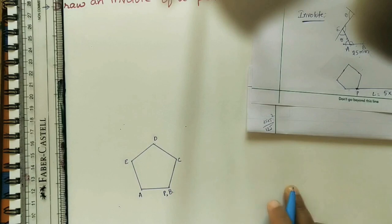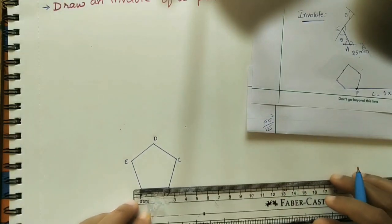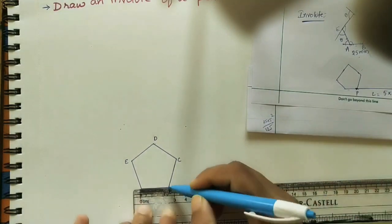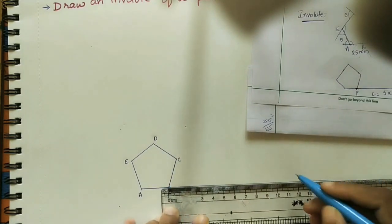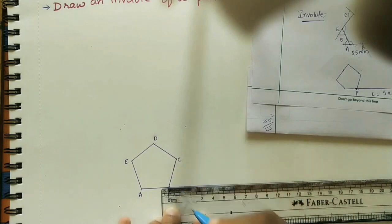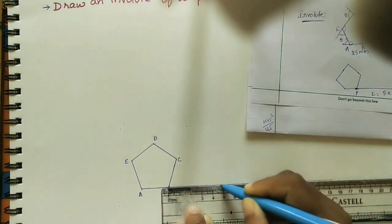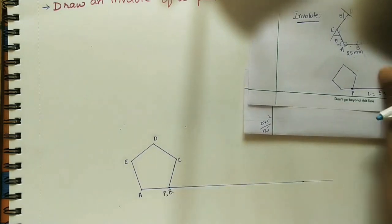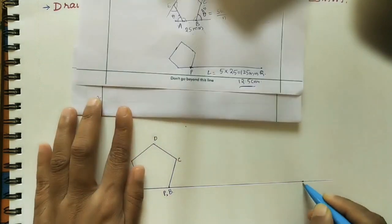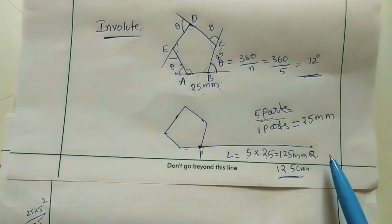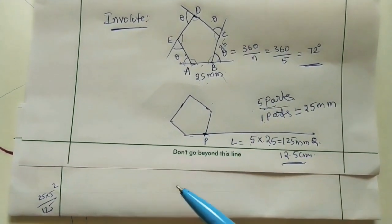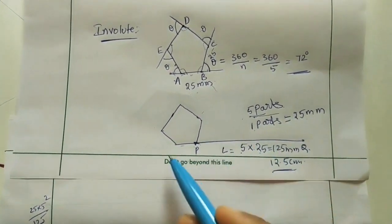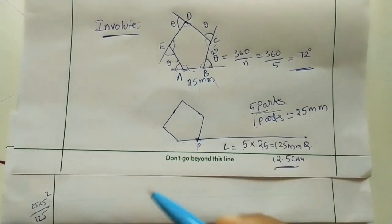By using scale from the P point, just do one line here. On it mark 12.5cm. Make it dark. Mark the end point is Q point. PQ length is 12.5cm. We have to divide PQ length into 5 parts because pentagon has 5 sides. Each part is 2.5cm, that is side length of the pentagon.